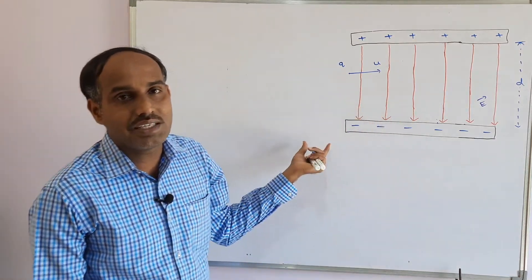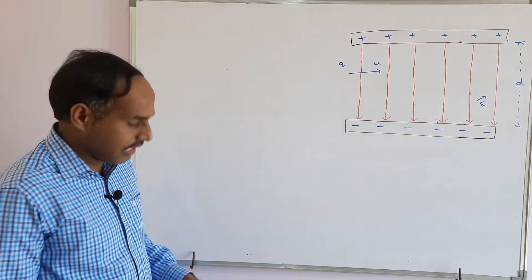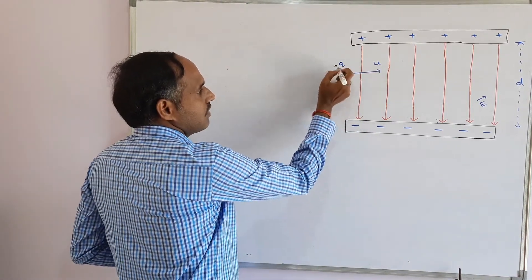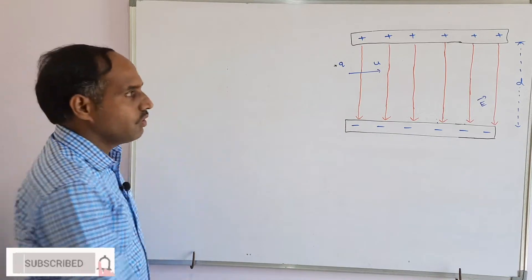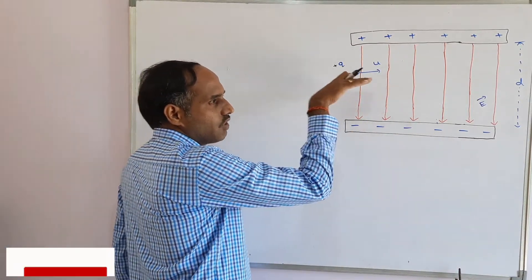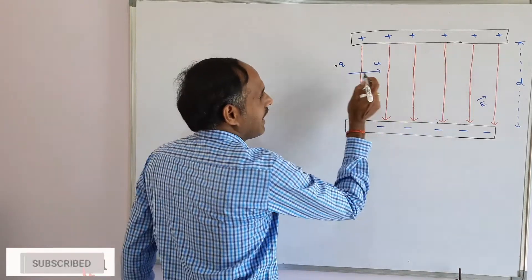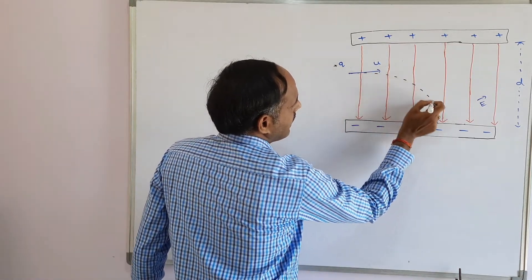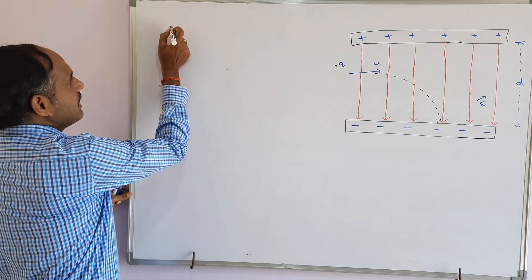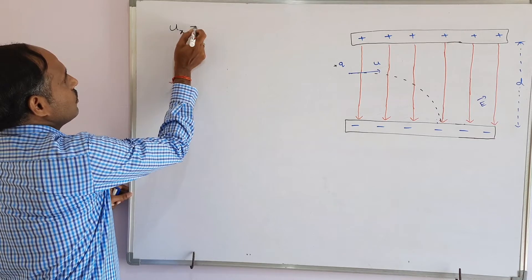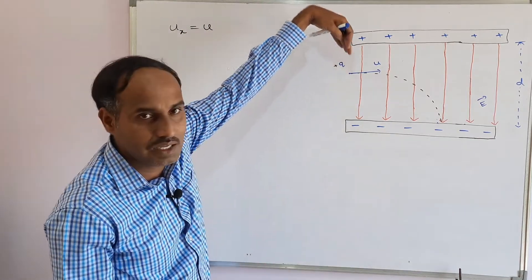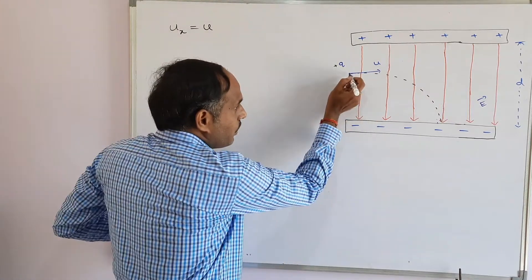We are going to find the velocity and the direction of velocity after a certain time. Here I am projecting a particle of positive charge with a velocity u. Since it experiences a force in the direction of the electric field, it cannot remain along a straight line. We take the path of this projectile accordingly. Initially, we are projecting it in the horizontal direction only, so the horizontal component of velocity is u.